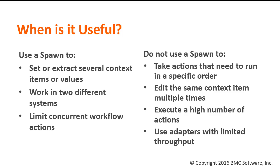You also should not execute too many actions at once, because each action does still take time and resources. Running a spawn with 100 paths is like running 100 workflows at once. You should use 10 or fewer paths if you are working only with context items, and 5 or fewer if you are calling adapters or child workflows. Also, your spawns may be limited by other throughput restrictions. An adapter that can only process one request at a time will still only process one request at a time even if you use a spawn to send several at once. In this case, you must either increase the adapter's throughput or use a normal workflow path.